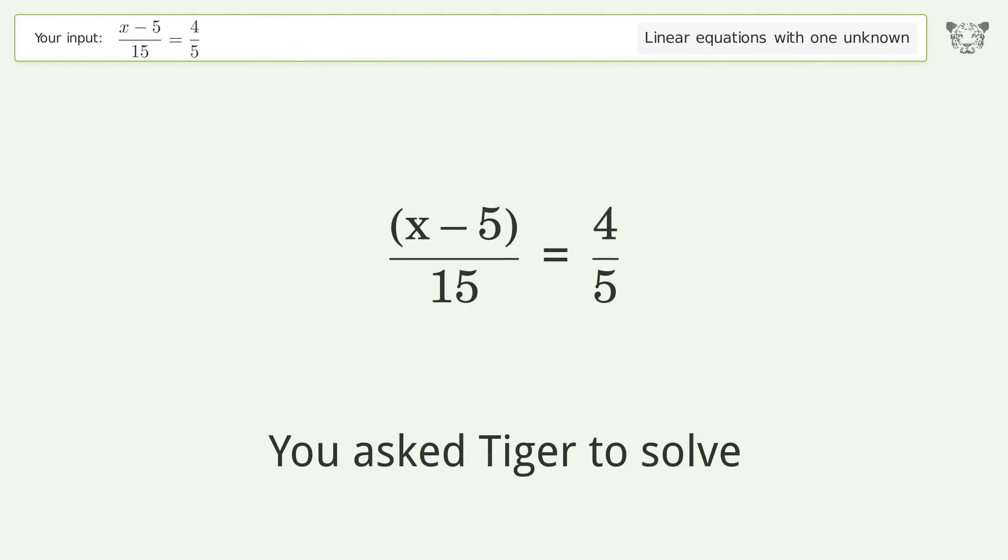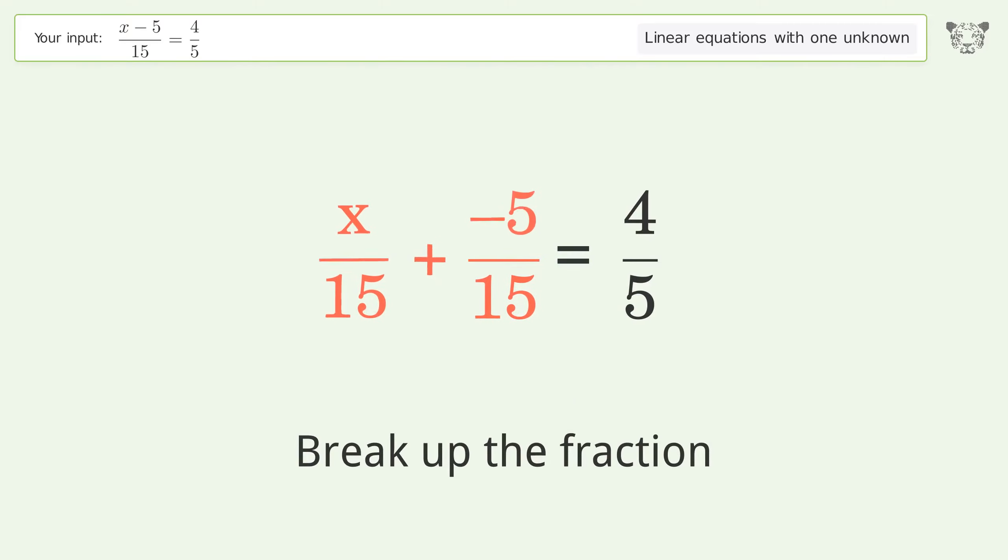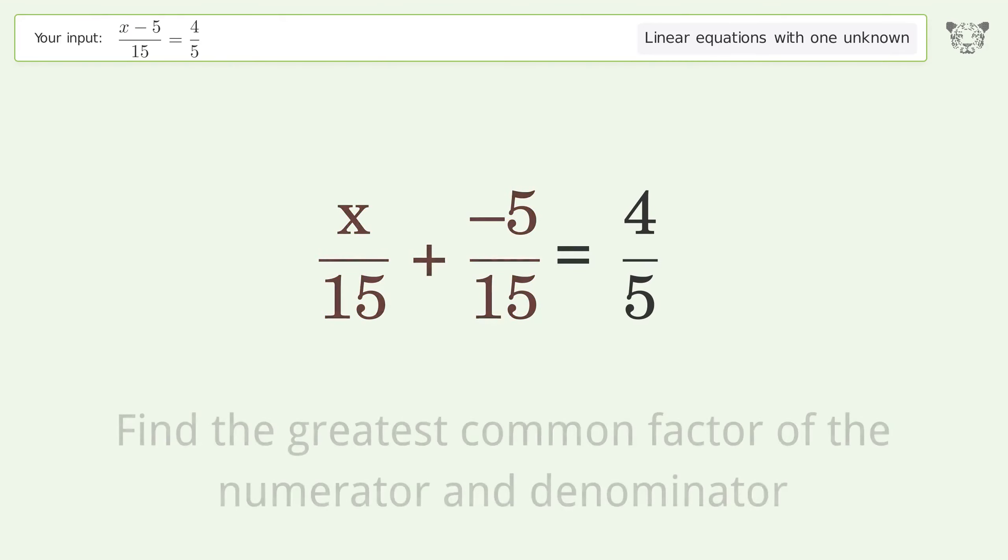You asked Tiger to solve this. It deals with linear equations with one unknown. The final result is x equals 17. Let's solve it step by step. Simplify the expression, break up the fraction, find the greatest common factor of the numerator and denominator.